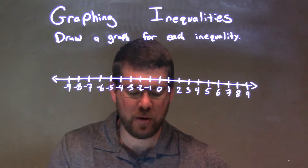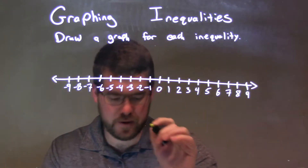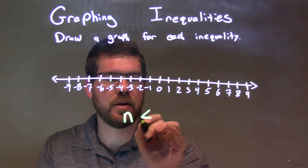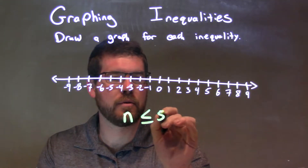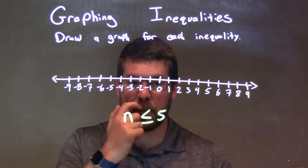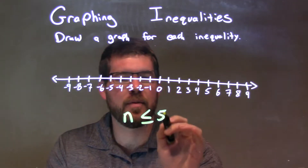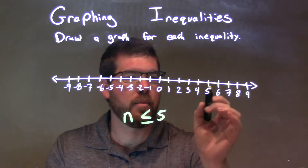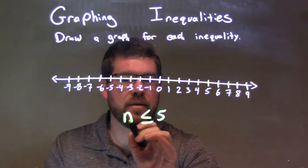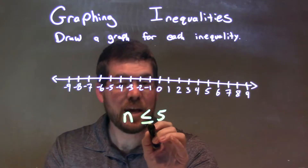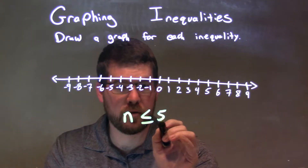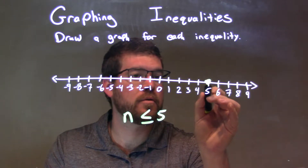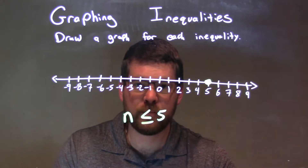I always give this inequality: n is less than or equal to 5. The key thing is looking at this positive 5. Positive 5 is right here, and since n can equal positive 5 — n equals positive 5 — we put a closed circle right there at 5.